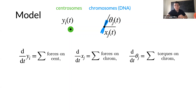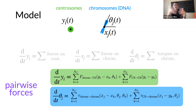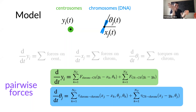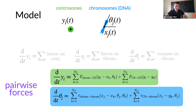Positions and angles move based on forces and torques. We assume everything interacts pairwise: poles interact with poles, and poles also interact with DNA. Each centrosome interacts with others based on the vector between them. The interesting thing is that the torque term — the angle — and the forces they exert may also depend on the angle. So things depend on both distances and relative angles.